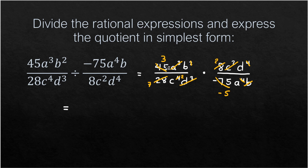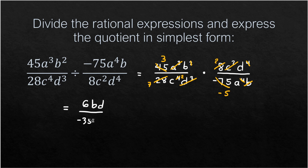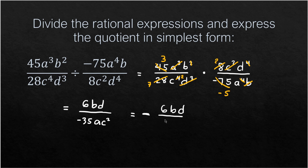Multiplying what is left: 3 times 2 is 6, giving us 6BD in the numerator. In the denominator we have 7 times negative 5, which is negative 35, giving negative 35AC². This can be written with the negative sign before the fraction: negative 6BD over 35AC². Both forms are correct; the latter is the standard form.